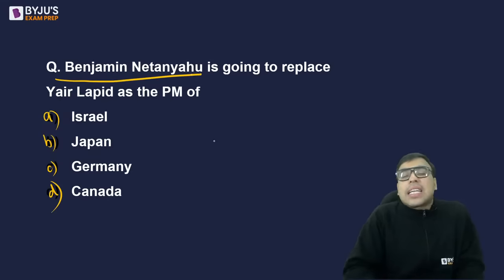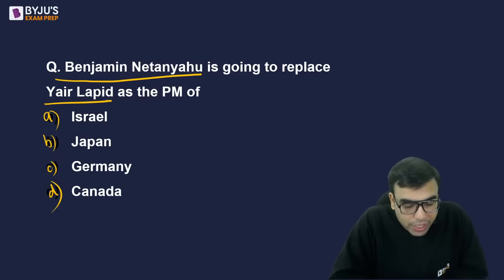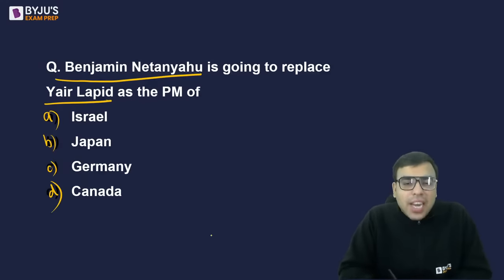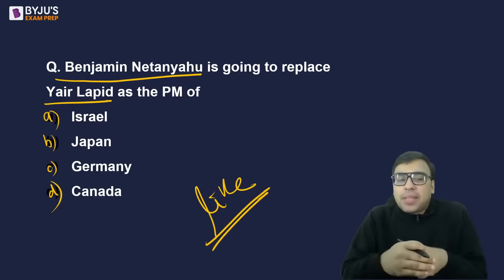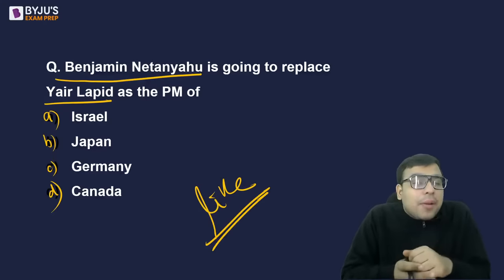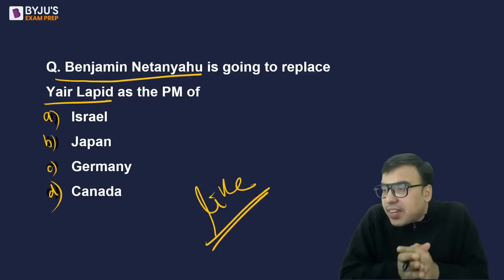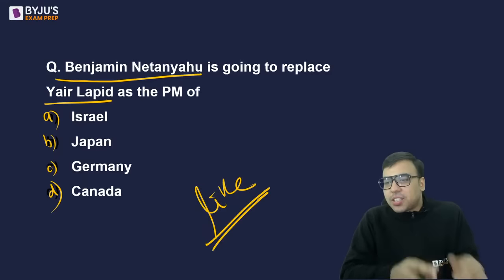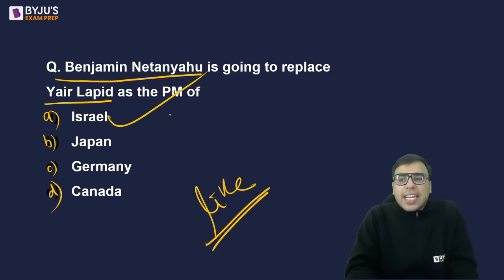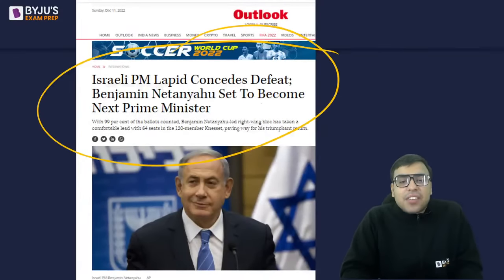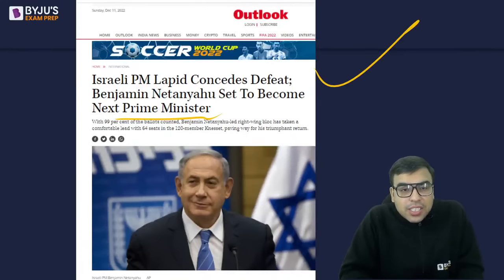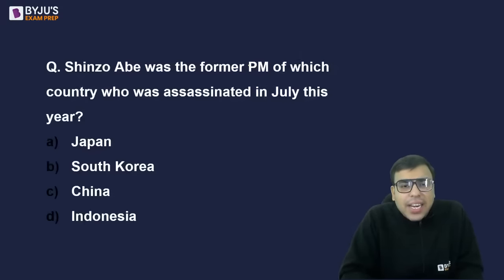Benjamin Netanyahu has won the election and is going to replace Yair Lapid as the Prime Minister of which country? Options: Israel, Japan, Germany, or Canada. The right answer is A — Israel. According to recent news, PM Lapid conceded defeat and Benjamin Netanyahu is set to become the next Prime Minister of Israel.